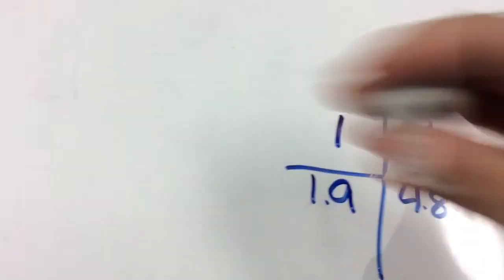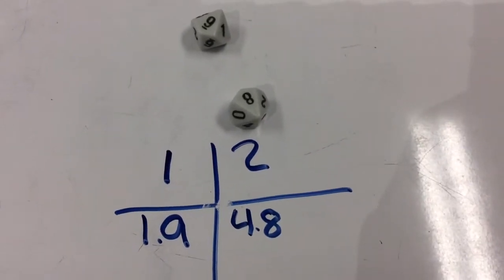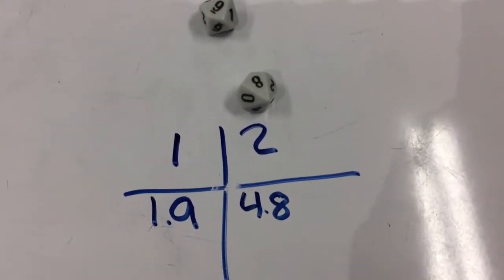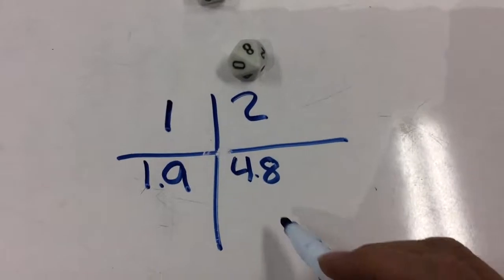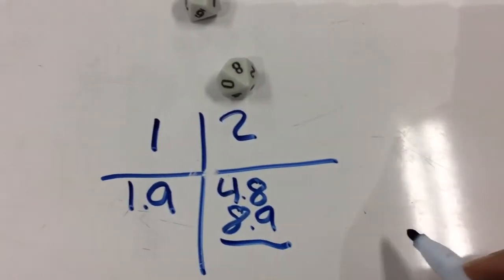Then it would be person two's turn again, my turn. Oof, that's a terrible roll. So I got a nine and an eight, so I would go 8.9, and then I would need to add that together.